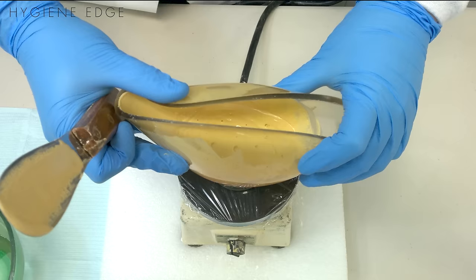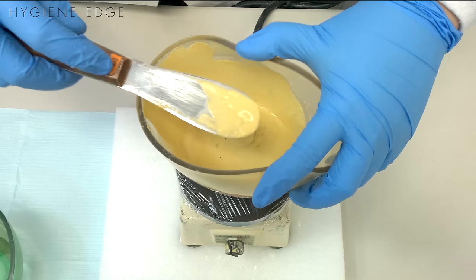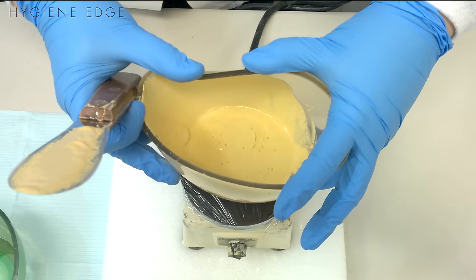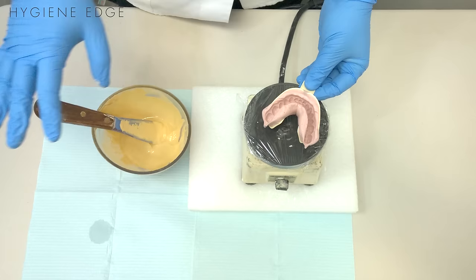A lot of people like to use their spatula and try to pop the bubbles. I wouldn't recommend doing that because that's going to incorporate air into your mixture. Just keep it on there for about 30 seconds until you see all the big bubbles come to the top, and you're done.